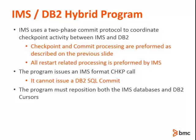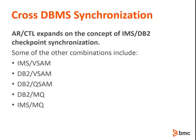Now let's take a look at how ARC expands on the concept of cross-DBMS synchronization. ARC accomplishes cross-DBMS commit synchronization by employing the concept of ARC checkpoint, or ARCCHKP. In addition to the IMS/DB2 checkpoint synchronization previously mentioned, the scope of the ARC checkpoint is much larger and allows for a much wider degree of synchronization possibilities. When an IMS checkpoint or DB2 commit is encountered, ARC uses that as a trigger to initiate ARC checkpoint processing. The ARC checkpoint processing would ensure that QSAM data buffers were flushed to DASD and that all participating DBMSs would issue their own commit. Some of the more common combinations are listed on this slide.